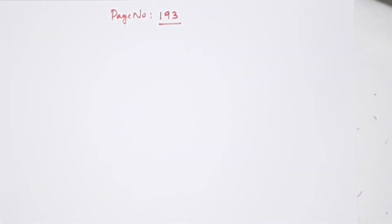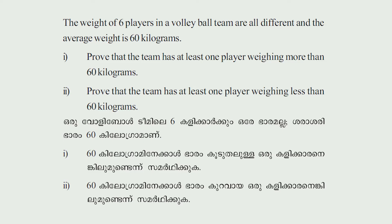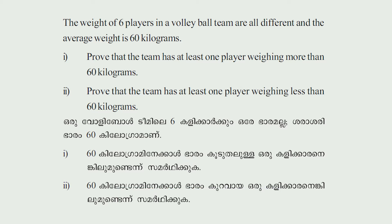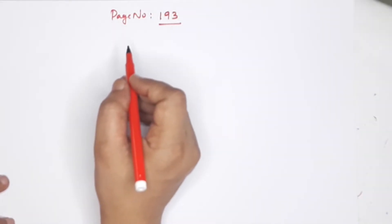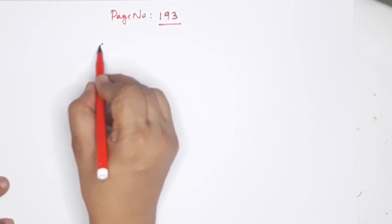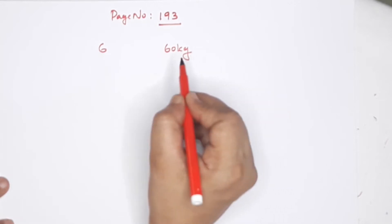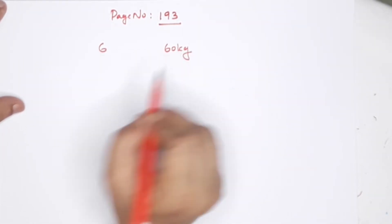The weight of six players in a volleyball team are all different and the average weight is 60 kilograms. Prove that the team has at least one player weighing more than 60 kilograms and at least one player weighing less than 60 kilograms. Six volleyball players, average weight 60 kilograms.